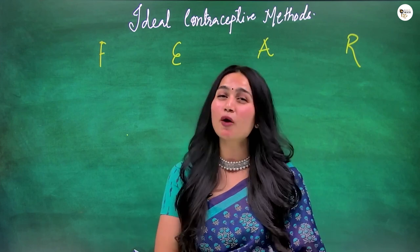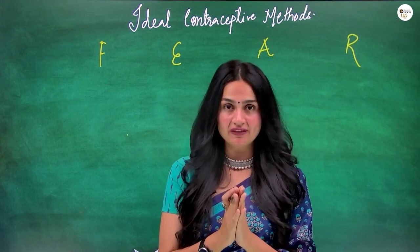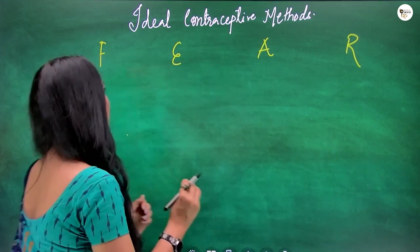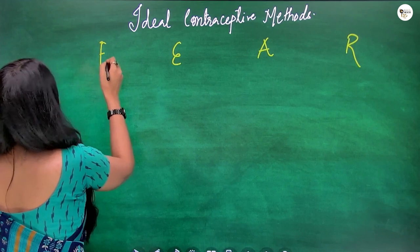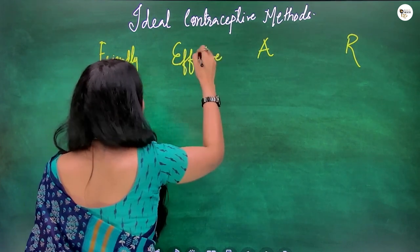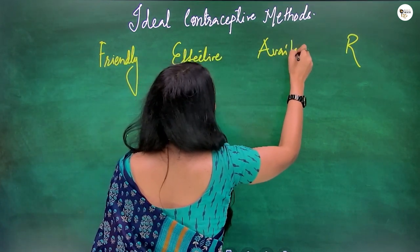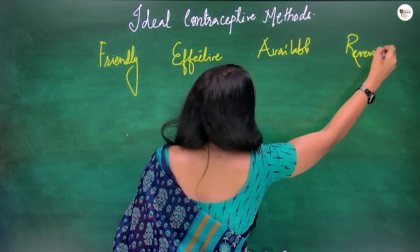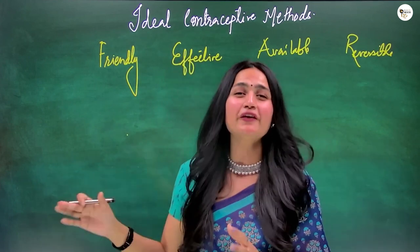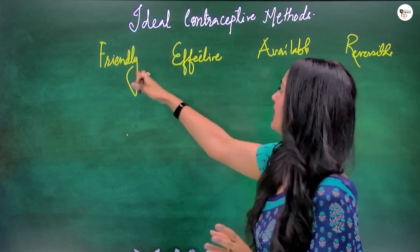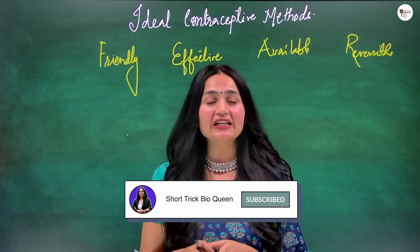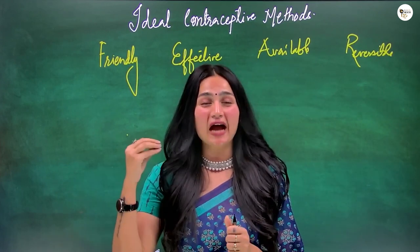There are many contraceptive methods, but the ideal contraceptive method is one that fulfills FEAR. F means user-Friendly, E means Effective, A means easily Available, and R means Reversible. Anything which will not allow pregnancy to occur and which follows the FEAR phenomenon is an ideal contraceptive.